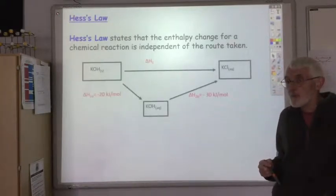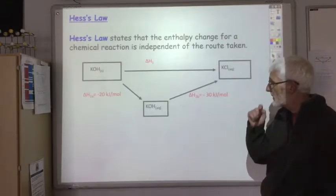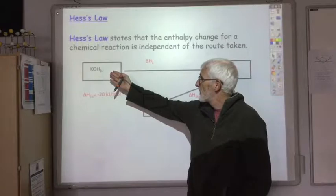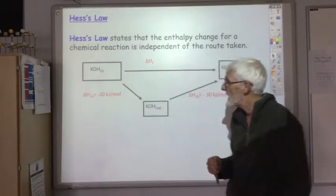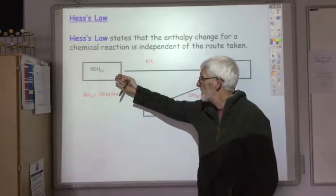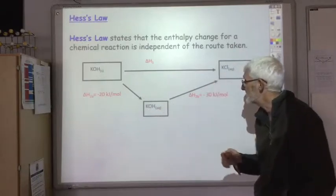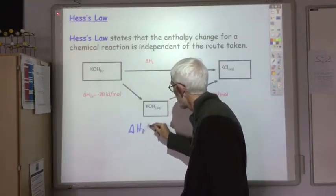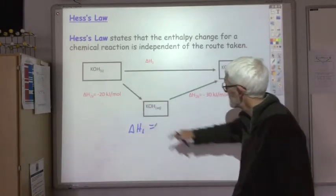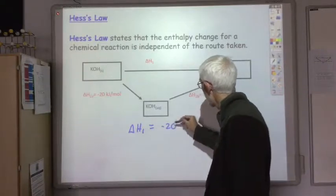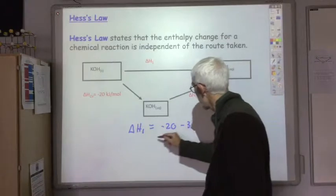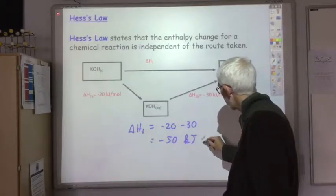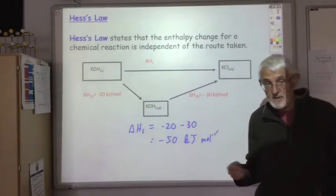You may remember in the lab we proved that Hess's law worked by carrying out this reaction. We prepared a solution of potassium chloride in two different ways: by dissolving potassium hydroxide in hydrochloric acid, or firstly by dissolving potassium hydroxide in water and then reacting it with hydrochloric acid. According to Hess's law, the enthalpy change for this route ΔH1 should equal the enthalpy change for the other route — so minus 20 plus minus 30 gives minus 50 kilojoules per mole — and we carried out this experiment in the lab and it worked very well.